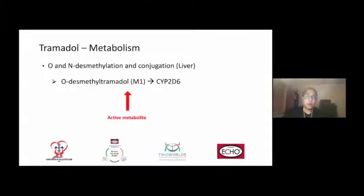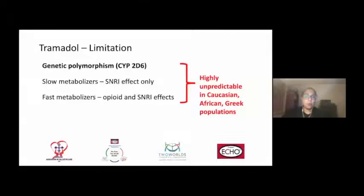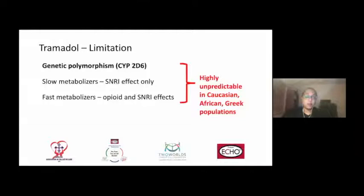Tramadol is metabolized through the CYP2D6 pathway in the liver, and this active metabolite — we'll refer to it as M1 — is what we will focus on. The problem with tramadol through this mechanism is that CYP2D6 as an enzyme is subject to genetic polymorphisms. That means slow metabolizers of tramadol will be restricted to the SNRI effect only. However, if someone is a fast metabolizer because of their CYP2D6 genetic polymorphism, they will have opioid as well as SNRI effects.